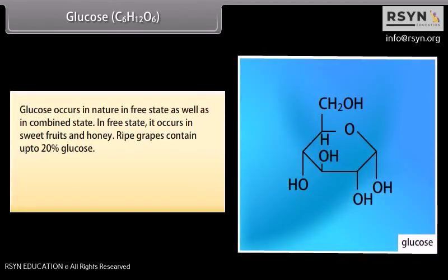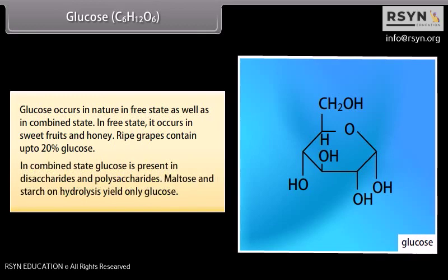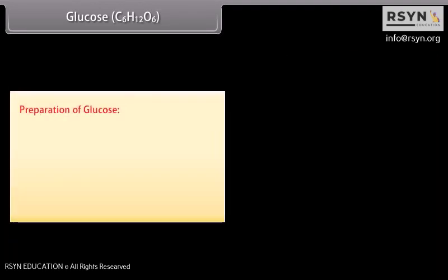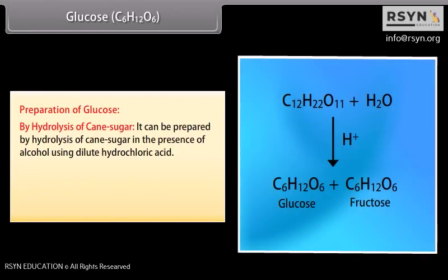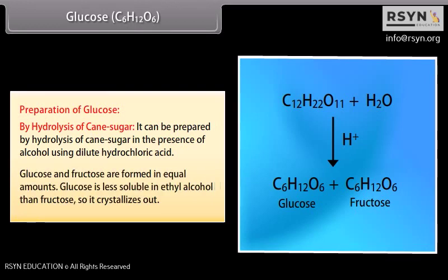Glucose (C₆H₁₂O₆) occurs in nature in free state as well as in combined state. In free state, it occurs in sweet fruits and honey; ripe grapes contain up to 20% glucose. In combined state, glucose is present in disaccharides and polysaccharides. Maltose and starch on hydrolysis yield only glucose. Glucose can be prepared by hydrolysis of cane sugar in the presence of alcohol using dilute hydrochloric acid, yielding glucose and fructose in equal amounts. Glucose is less soluble in ethyl alcohol than fructose, so it crystallizes out.